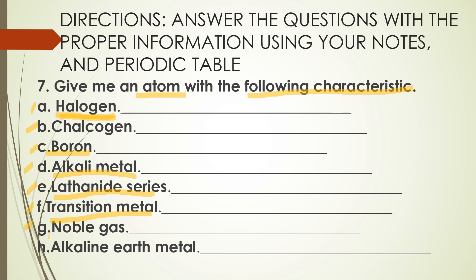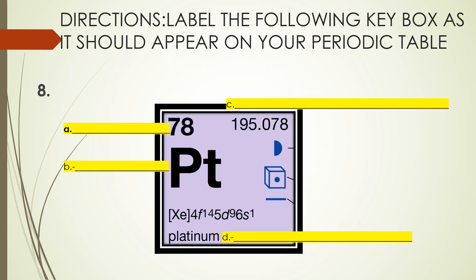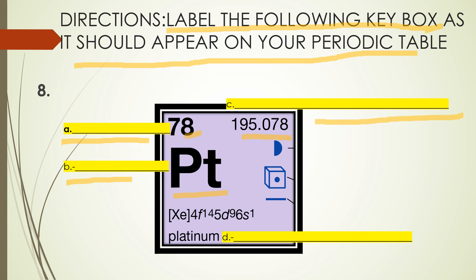Number eight: you need to draw and label the following key box as it should appear on your periodic table — write it in your notebook and in your Google Documents. For element 78: what does that number mean? What is Pt? What is the element name? Label letter (c) and letter (d) as well. It's super easy.